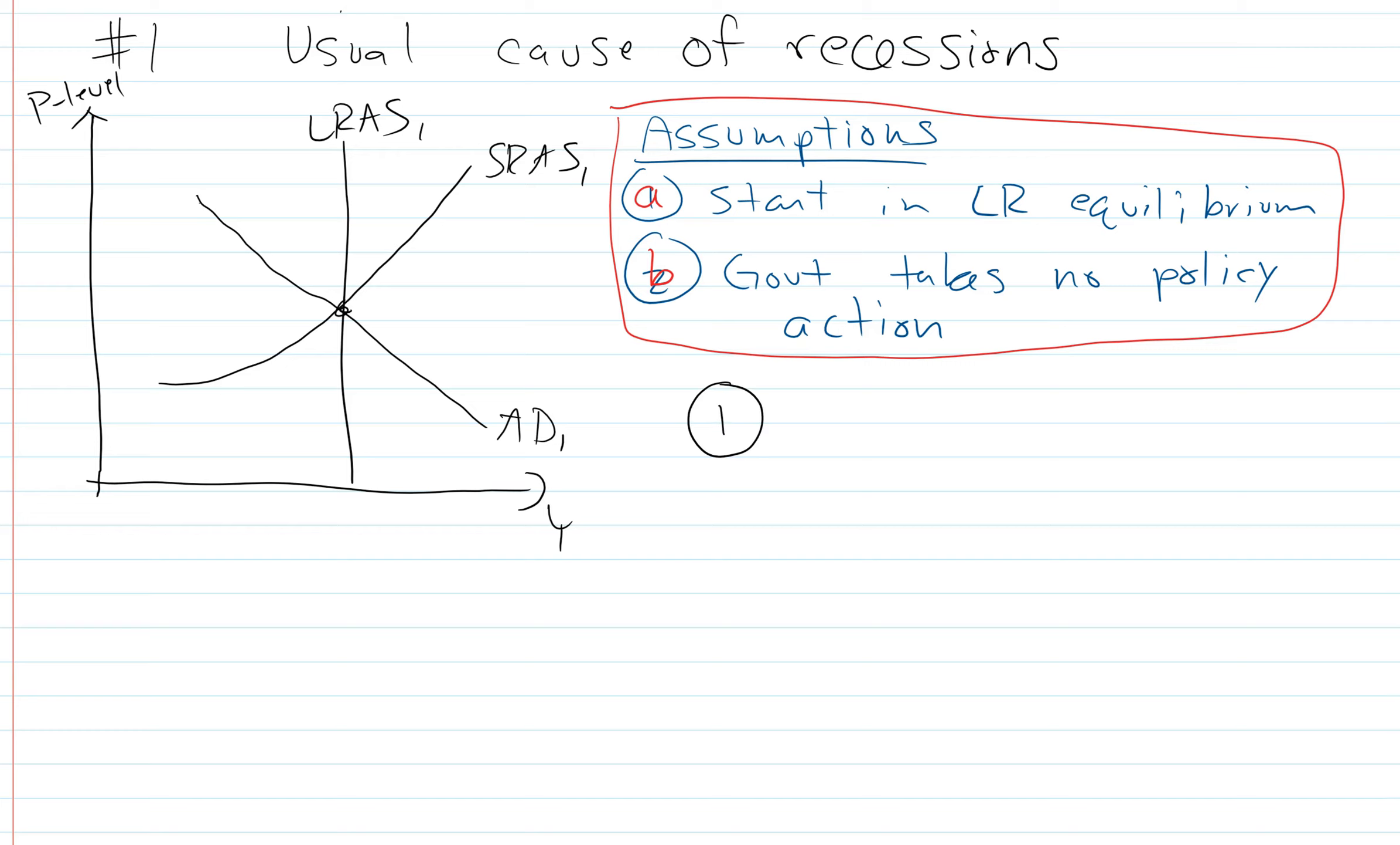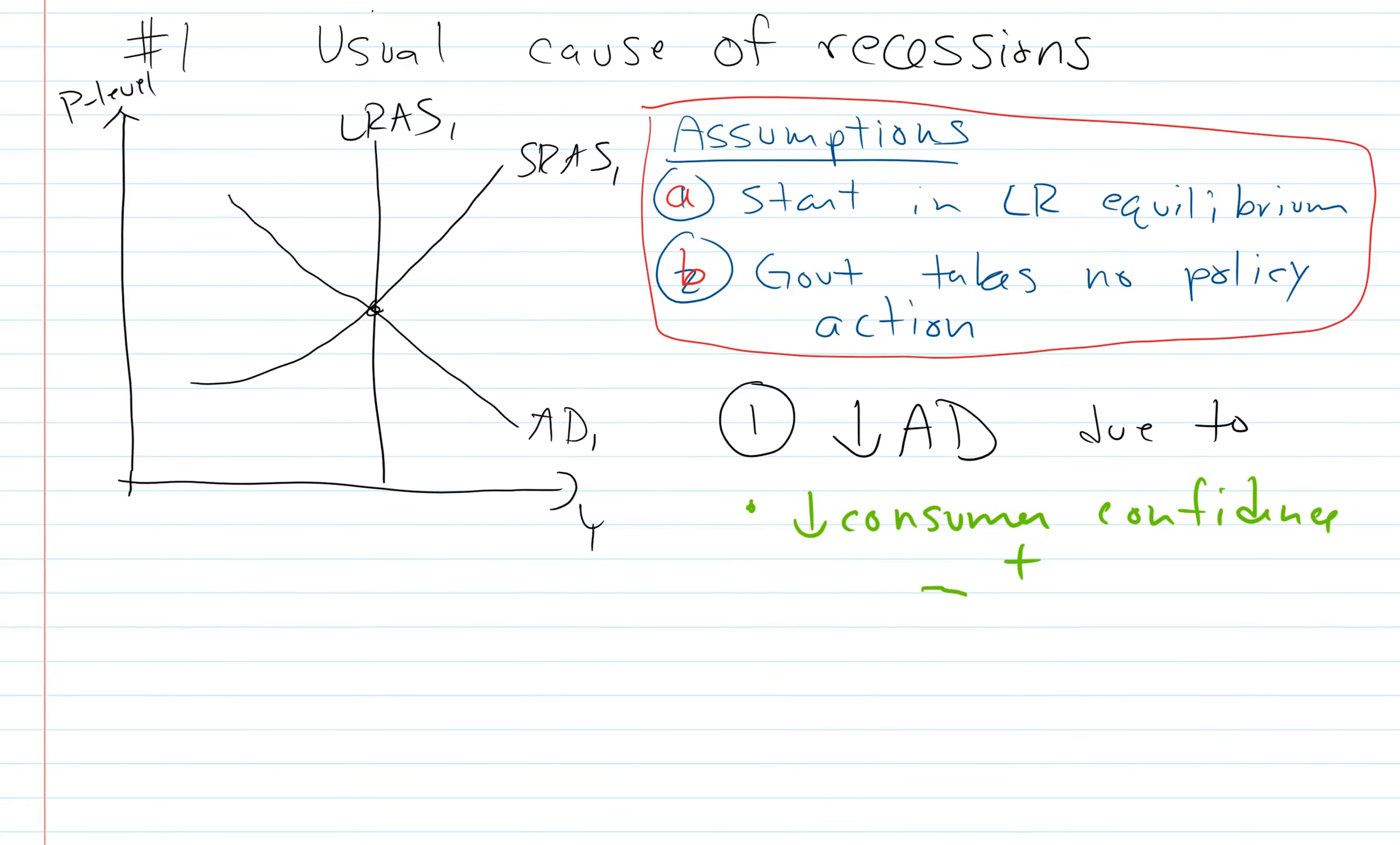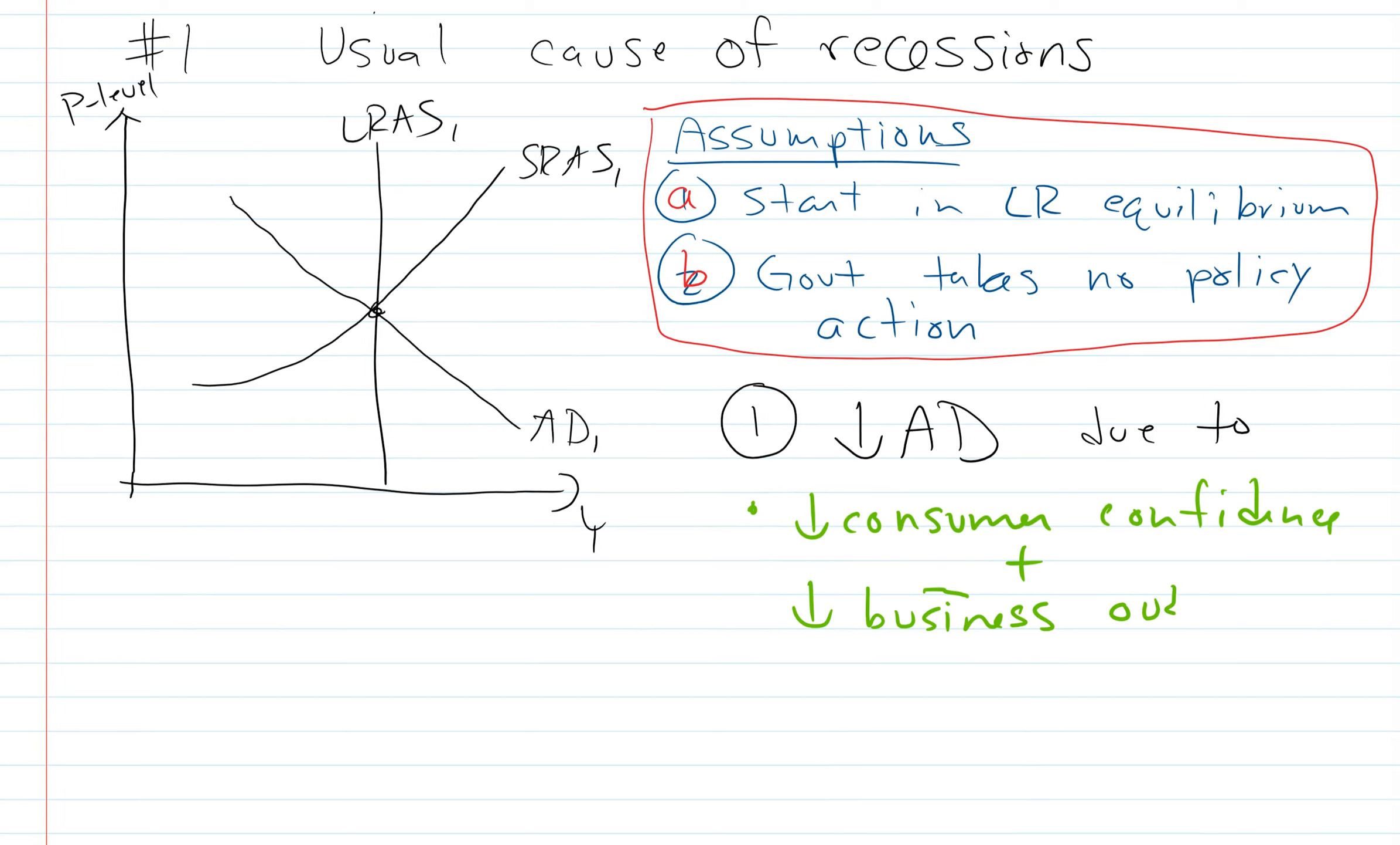So the first thing that's going to happen is generally it seems like most recessions, at least over the period analyzed, are caused by falling aggregate demand. So we get aggregate demand falls due to something. For example, this could be a fall in consumer confidence, also a decline in the business outlook. So consumers get worried about the future, and they start to spend a little bit less and save a little bit more. Also, the firms get worried about the future, and they don't want to do big investment projects.